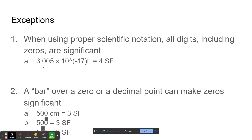Now, some exceptions. Exception one: when you're using proper scientific notation, the number in scientific notation is between 1 and 10. All digits, including zeros, are significant. So you have a number between 1 and 10 times 10 raised to a certain power, and every single digit is going to be significant no matter what, as long as it's in proper scientific notation.